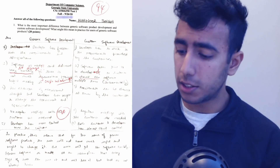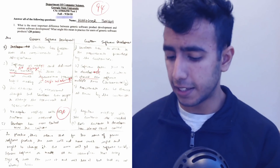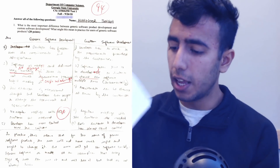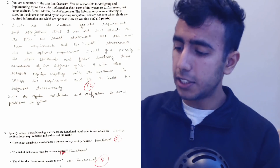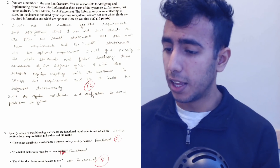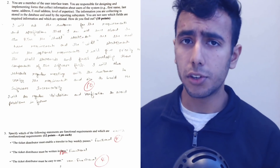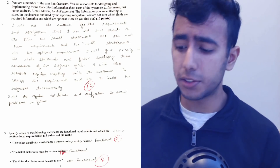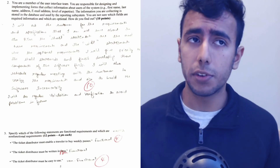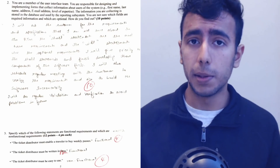Starting with my software engineering class, the first question was from the textbook — I knew it, I did some mistakes, but I got full points. The next question was situation-based, where we were supposed to imagine that we are a software engineer and how we can prevent making some mistakes. I knew that because I have worked as a software engineering intern and I know how to solve those problems easily.